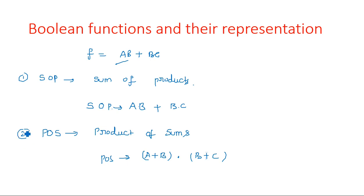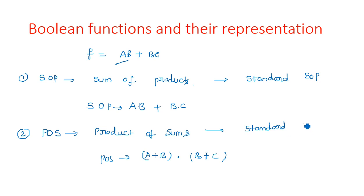These are the two examples of representing a Boolean function — it may be represented in terms of Sum of Products or Product of Sums. There are also two more types derived from these: standard SOP form and standard POS form. Standard SOP is slightly different from regular SOP. In regular SOP, the name comes from the expression — seeing AB plus BC, we say it is Sum of Products.